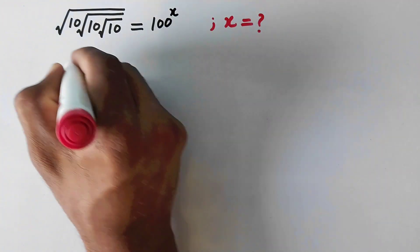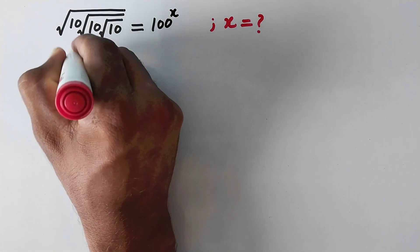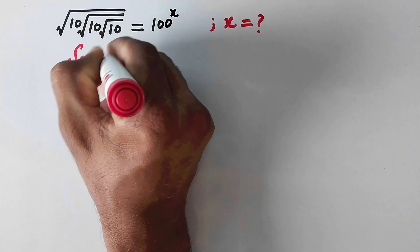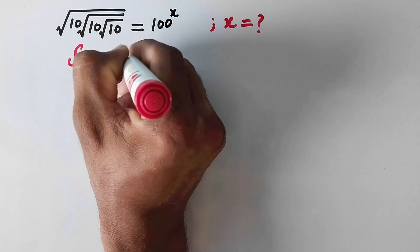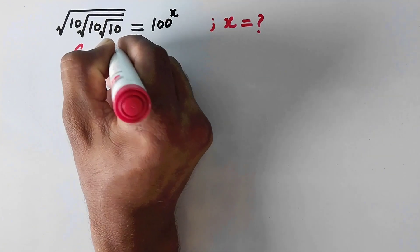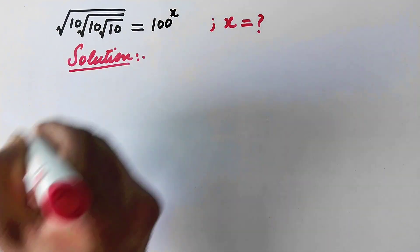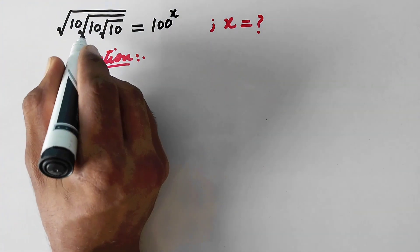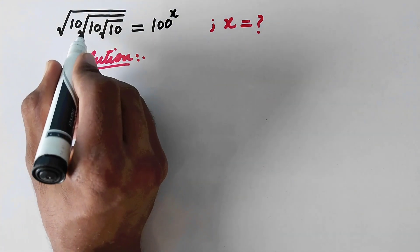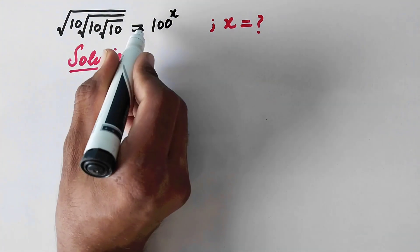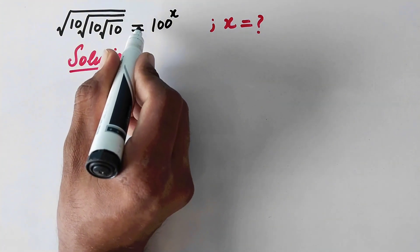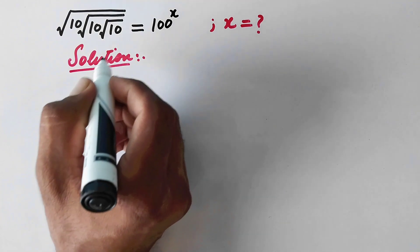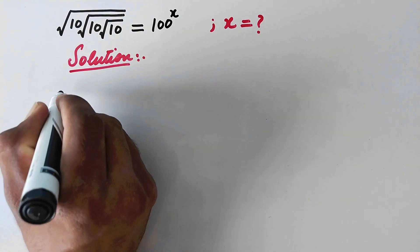Let us see the solution. So, here in the first step, we will write the original value. Then we will take square on both sides.